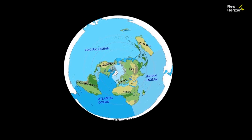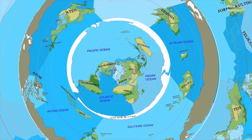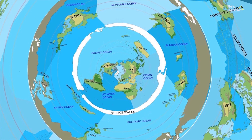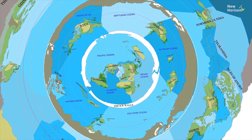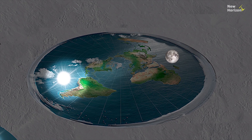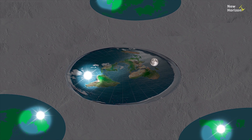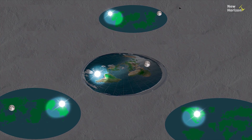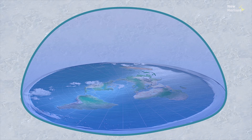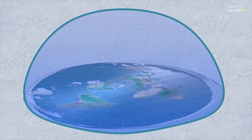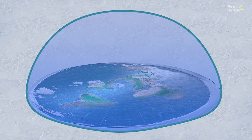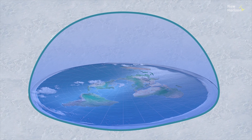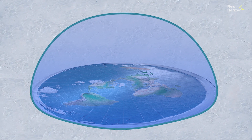Flat earthers claim that beyond Antarctica lies more than just continents — some claim there are entire worlds with their own suns and moons. If that was the case, how could someone go beyond Antarctica to seize resources by crossing the barrier of the dome?